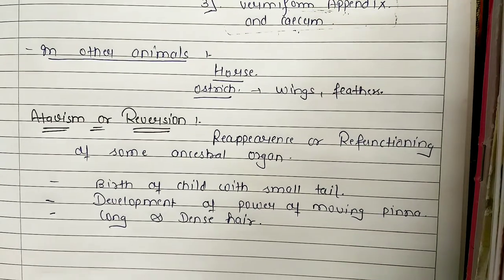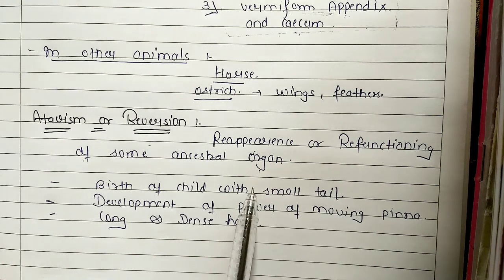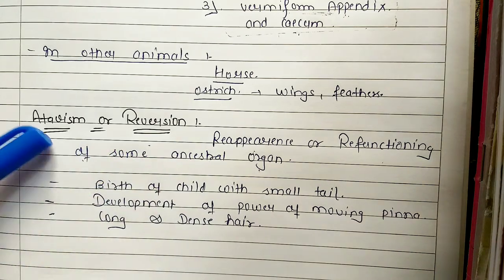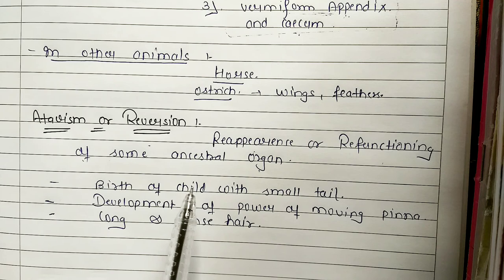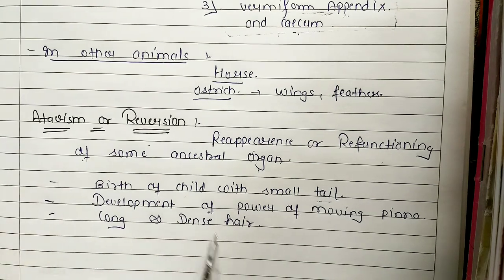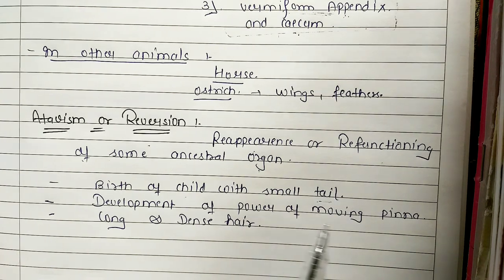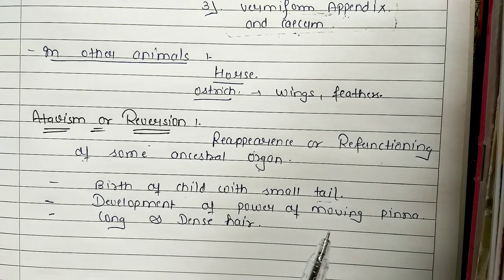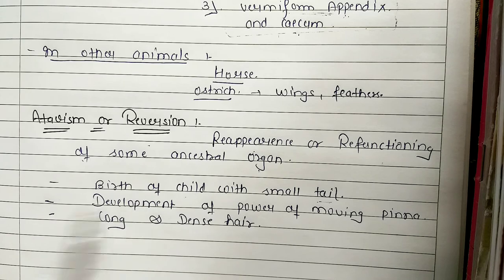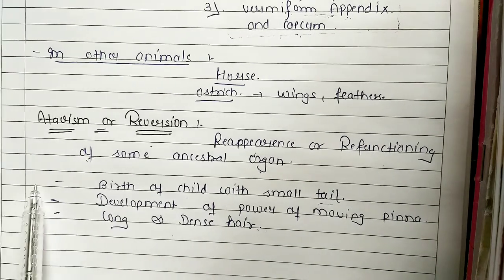Now the last definition: Atavism and Reversion. Atavism is the reappearance or re-functioning of some ancestral organs — such organs which were once functional, became non-functional, and then reappear. For example, the tail bone — in any child a small tail appears, that is an example of atavism. Also, the pinna — it is non-functional but at any time it was functional. In any person the pinna can move — that is also atavism. Another example: long or dense hair, which was present in ancestors, can reappear.